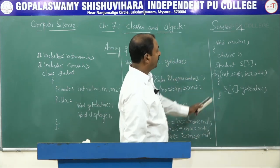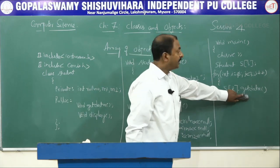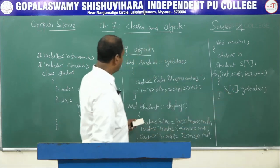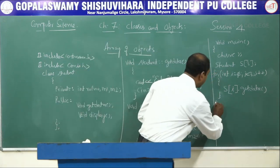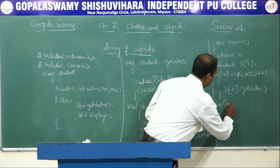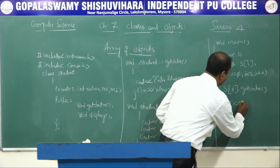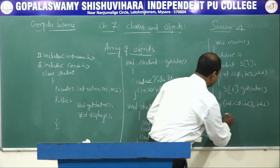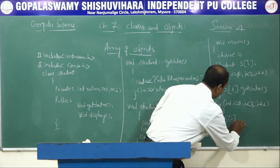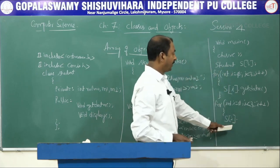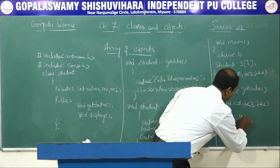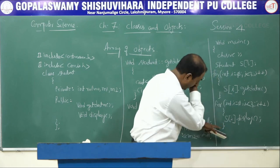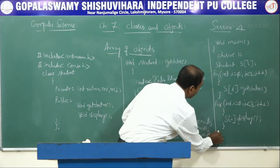After reading data for all three students, we use one more for loop to print the values by calling the display function: for(int i=0; i<3; i++) { s[i].display(); }. S[i].display() prints the data stored at each index. We close the for loop and the main function.